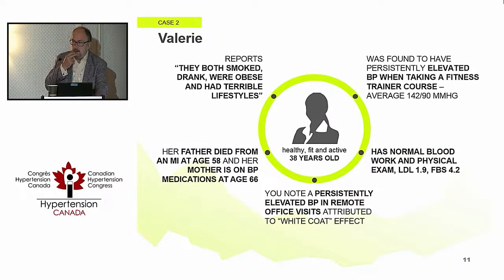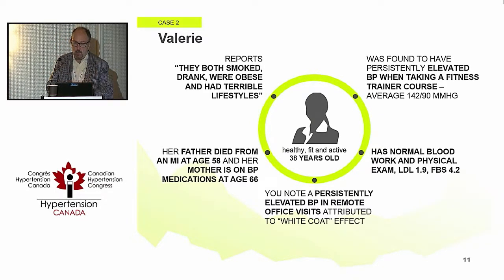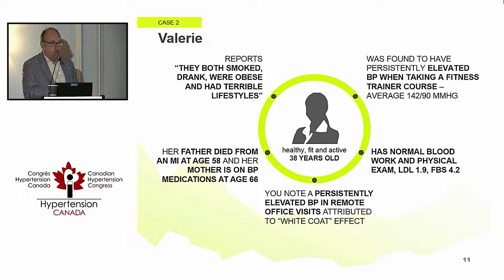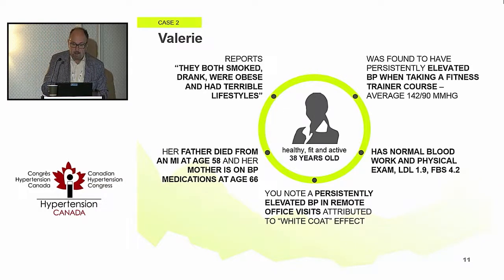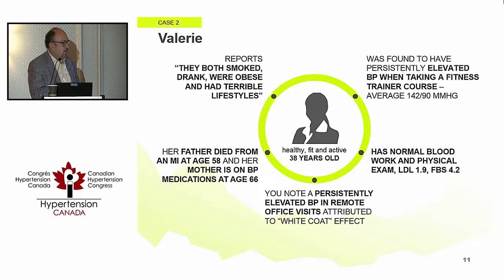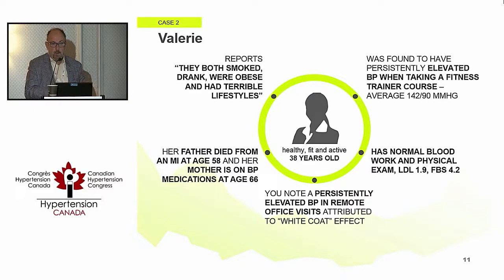Let's move to the other end of the spectrum. This is Valerie, 38 years old, persistent elevations in blood pressure at 142 over 90. Normal blood work — LDL looks fine, fasting blood sugar was fine. Blood pressures were persistently elevated in the office, and also elevated at the pharmacy and at home in the 140-145 range.